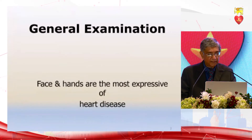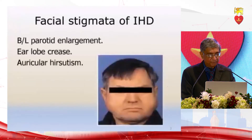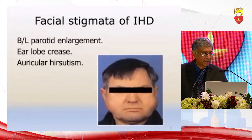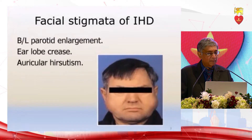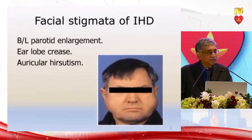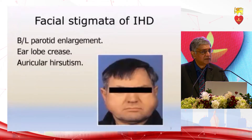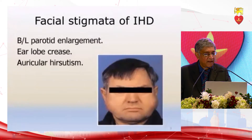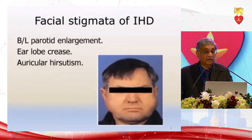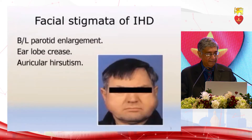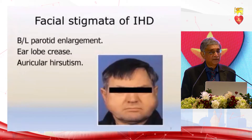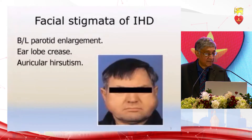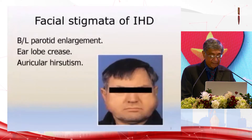In the general examination of a patient with cardiovascular disease, remember that the face and the hands are the most expressive of heart diseases. You look at the face and there are certain stigmata of ischemic heart disease. For example, bilateral parotid enlargement — a feature of excessive alcoholism. Mild alcoholism is not a risk factor for ischemic heart disease, but excessive alcoholism is, and therefore parotid enlargement is a risk factor. Also look for the auricular crease and auricular hirsutism, now recognized as a physical sign indicating underlying ischemic heart disease.